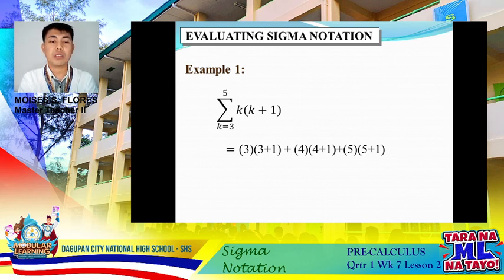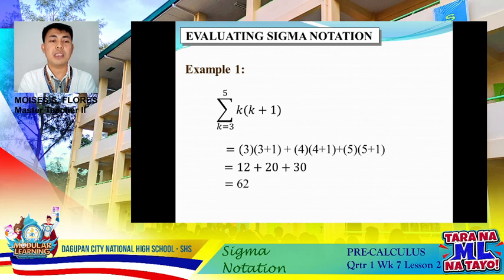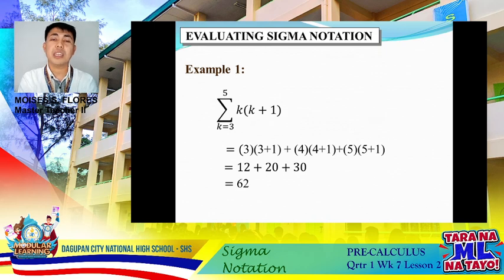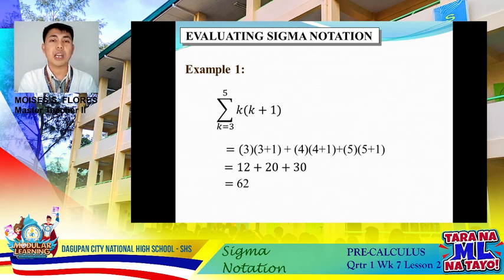After that, we simplify further. We have 12, 20, and 30. Finally, the summation of k(k+1) as k goes from 3 to 5 is 62. So again, how do you do that? Simply substitute the values from the lower bound until we reach the upper bound.